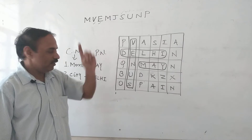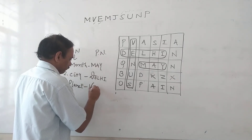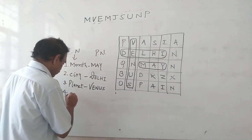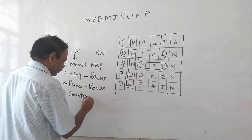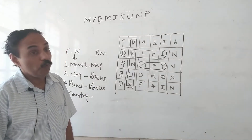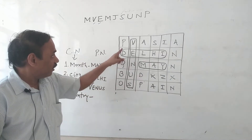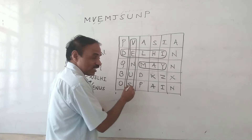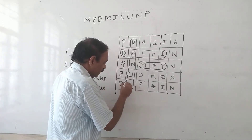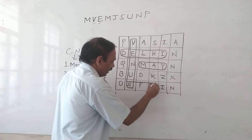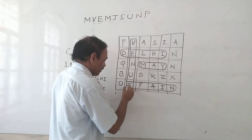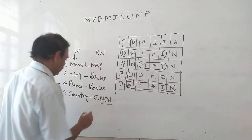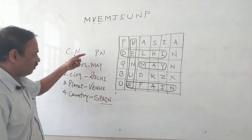Month - May. City - Delhi. Planet - Venus. Fourth - country. C-O-U-N-T-R-Y. Many countries are there, country is a common name. But which country is written here? Spain - S-P-A-I-N. Spain is a country. Common noun is country, proper noun is Spain.